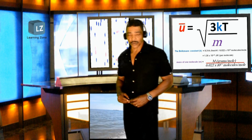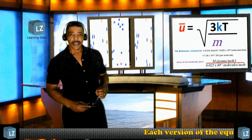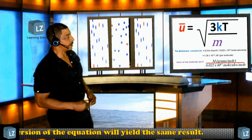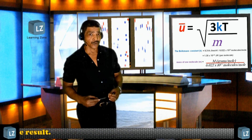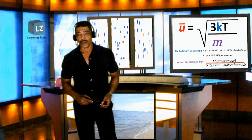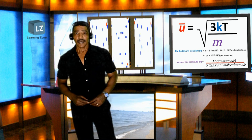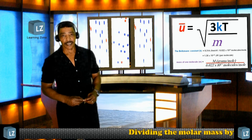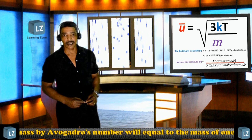There are actually two versions of the root mean square speed equation. As you've just witnessed, in one version the universal gas constant is incorporated into the calculation. In the second case, we incorporate Boltzmann's constant k, which has a value of 1.381 times 10 to the negative 23 J per K. In the first case where we incorporate the universal gas constant, we're calculating the RMS speed of one mole of a gas. In the case where Boltzmann's constant is incorporated, we're actually calculating the RMS speed of one molecule of a gas. Remember, to calculate the mass of one molecule of a gas, simply divide the molar mass by Avogadro's number.